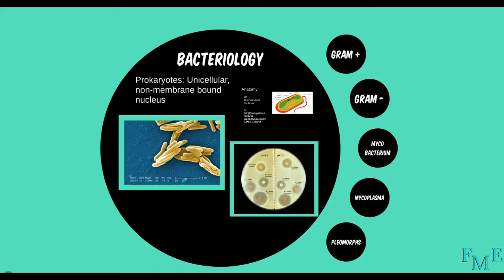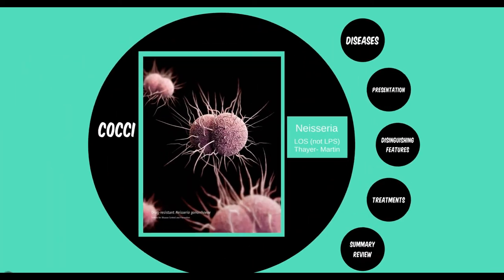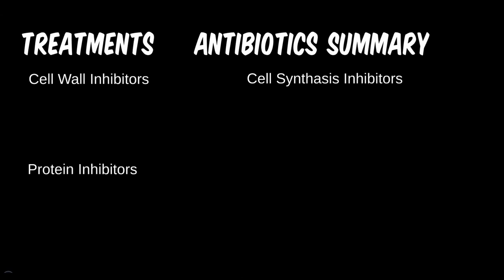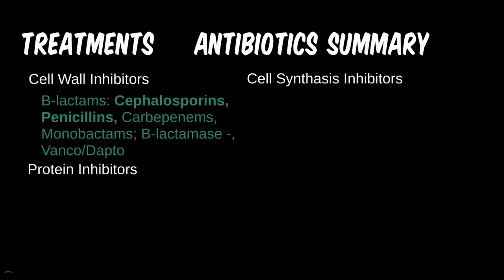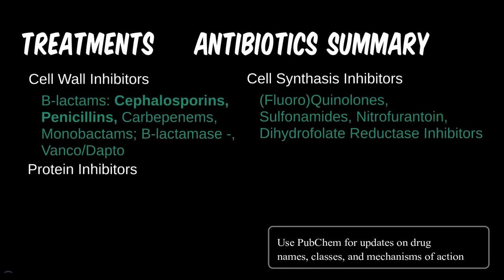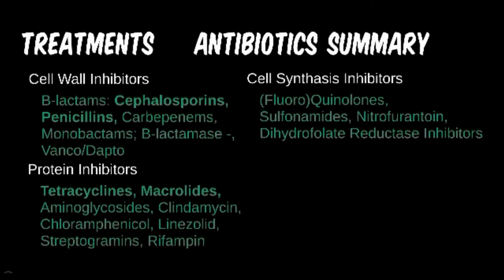Luckily, this was a generally short module. We will need extra time to finish up on the list of antibiotic categories. The protein inhibitors are the largest and most diverse class, and it requires a little extra time to cover them all. Up to this point, we've covered the basics of the beta-lactam and cell synthesis inhibitor antibiotic categories. If you haven't watched these past modules yet, you may want to catch up on those before continuing.